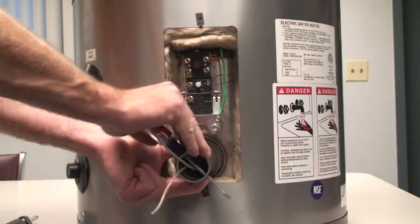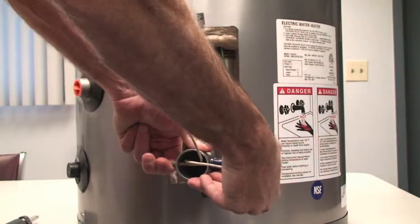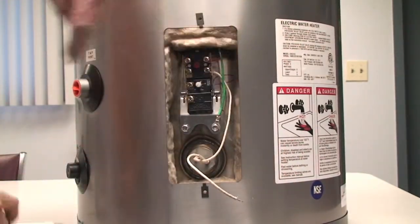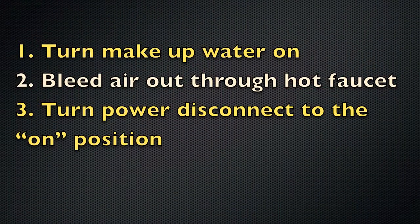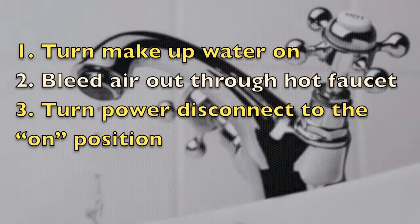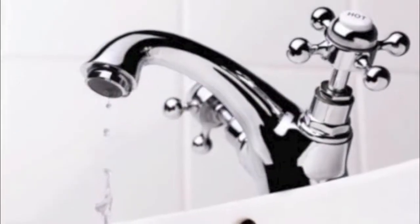Next, reinstall the replacement element. Reinstall wiring to combination ECO thermostat. Turn the makeup water supply to the on position, bleed the air out through the hot faucet, and turn the power disconnect to the on position. Test the heater.